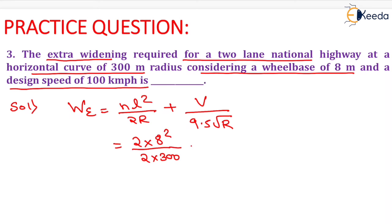So it will be equals to 300 meter plus speed is given as 100 kilometer per hour. So we will put it as 100 divided by 9.5 root 300.